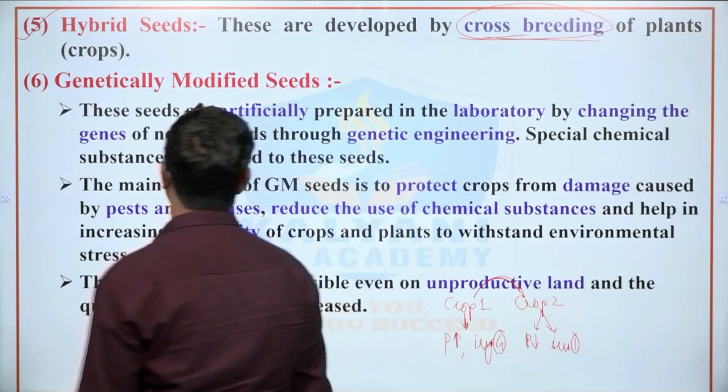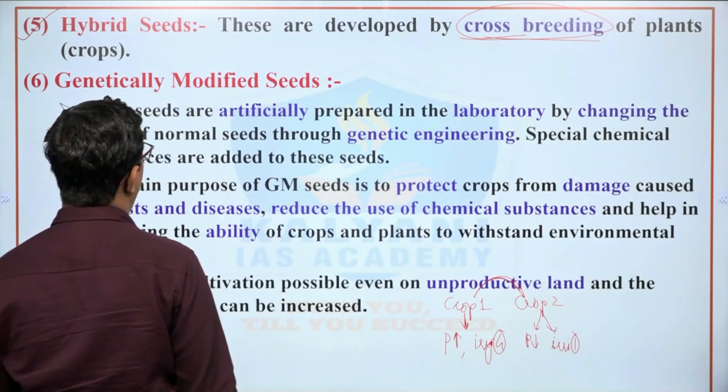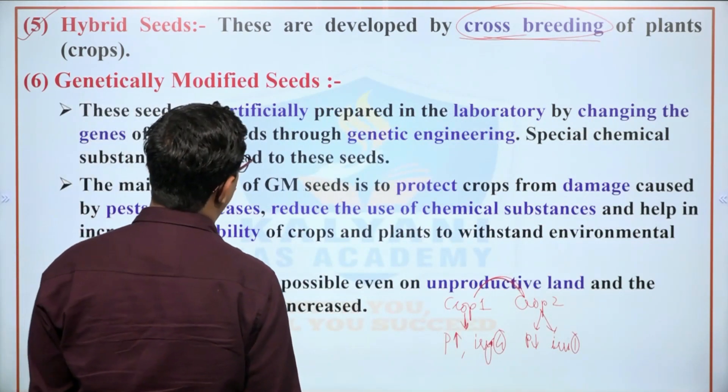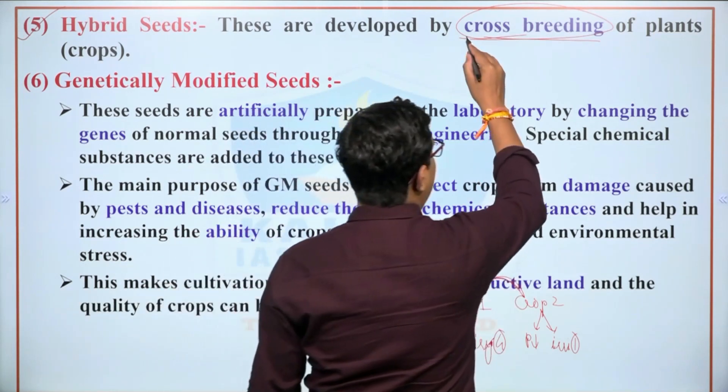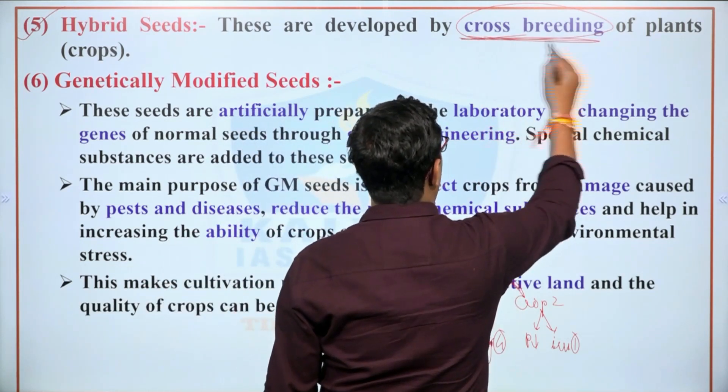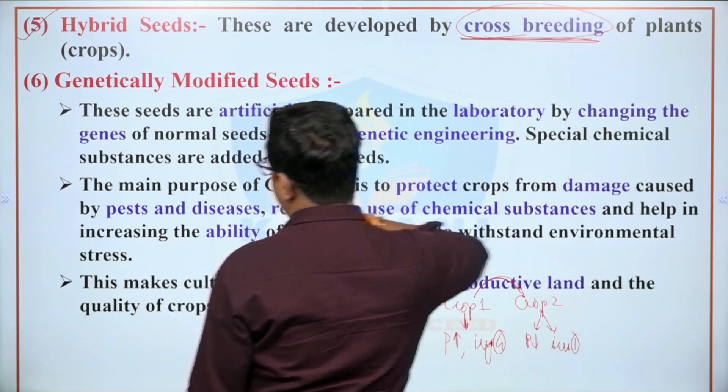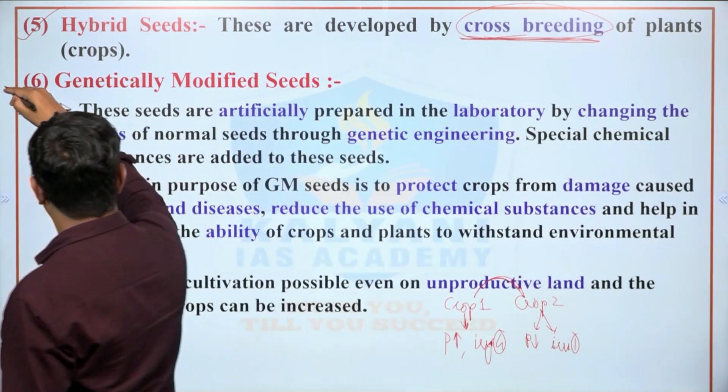Hybrid seeds are developed through the breeding of plants and crops, combining desirable characteristics such as higher yield with lower water requirements.